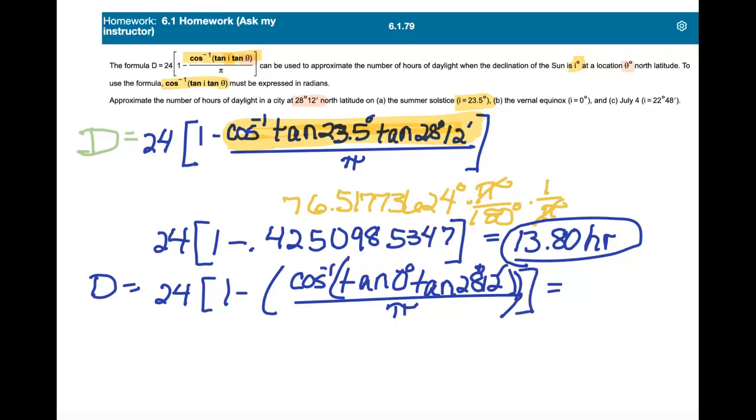and that's being divided by pi. So we're going to plug this into our calculator. We'll get a degree measure, change that to radians, divide by pi, which is like dividing by 180, and simplifying all that, we end up with 12 hours.